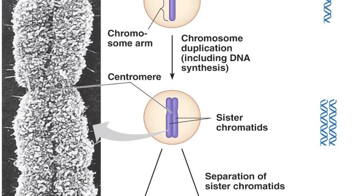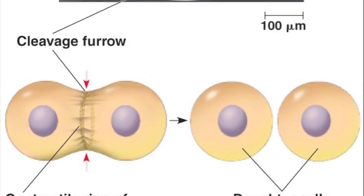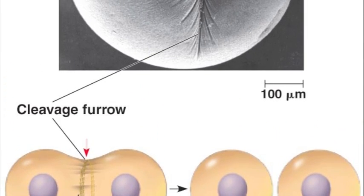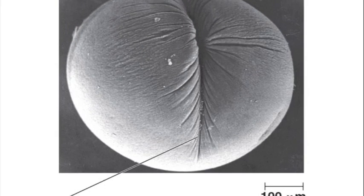Cytokinesis, which is the last stage of the cell cycle and not part of mitosis, follows as the cell begins to pinch off at the cleavage furrow to become two daughter cells.